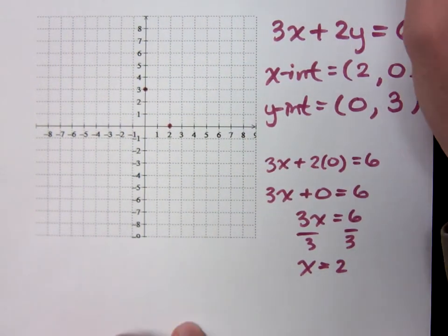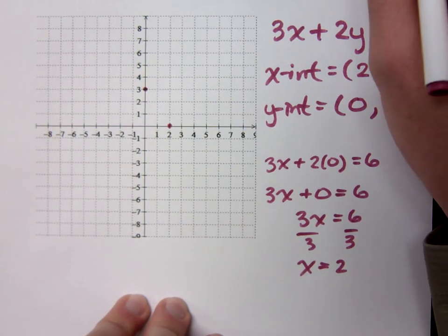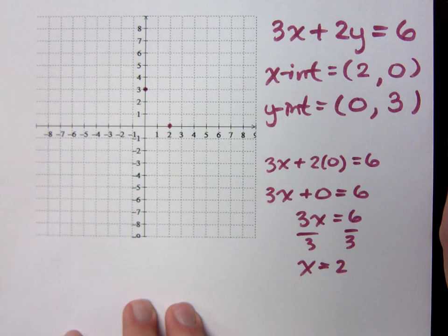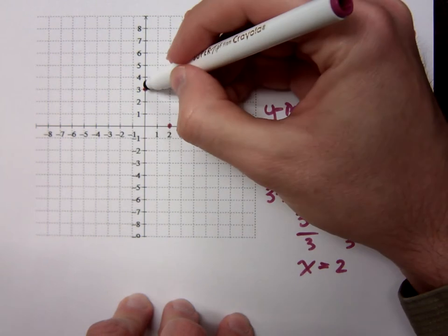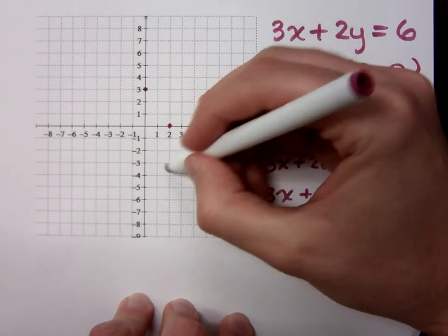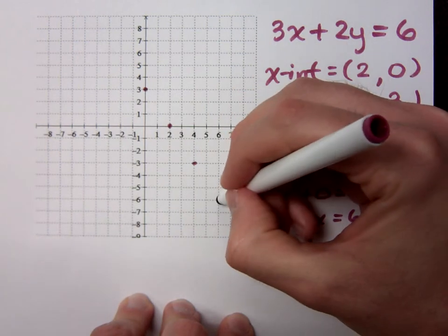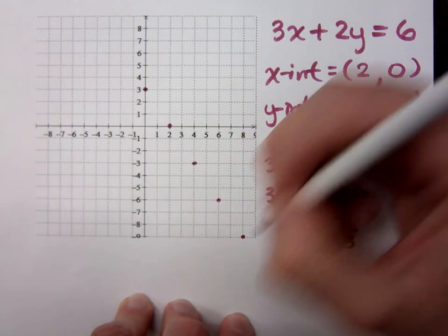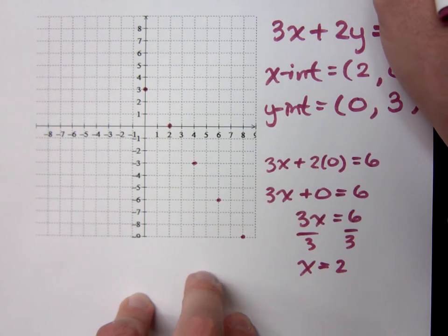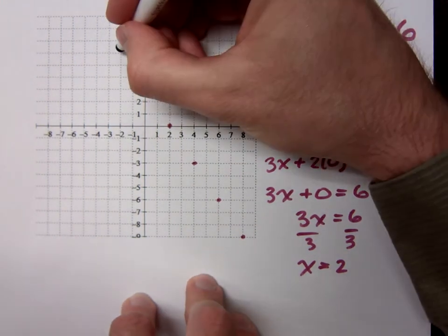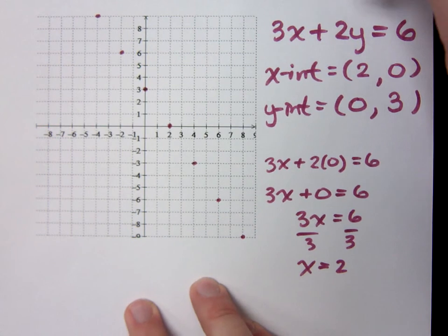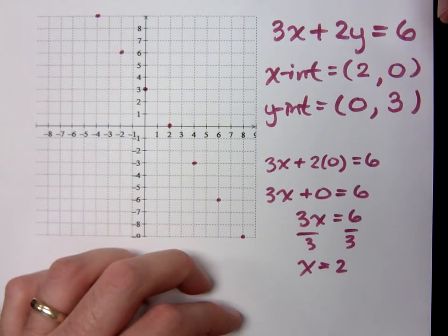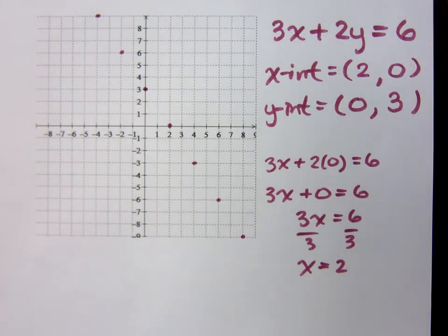Now, this is supposed to be a line because these are linear functions, right? So I can extrapolate — fancy word — and get the other points. From here to here, I went down 3 over 2. Let's keep doing that: down 3 over 2, down 3 over 2. I can go backwards too: up 3 to the left 2, up 3 to the left 2. Does that look like it forms a straight line? You better believe it. We need a nice straight edge.